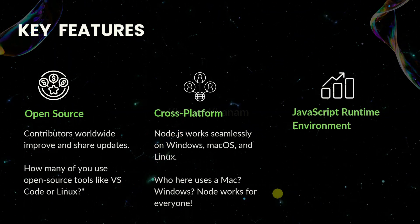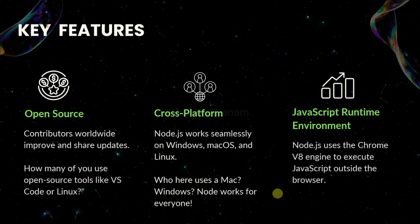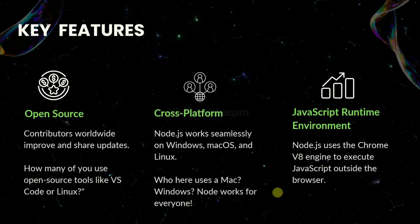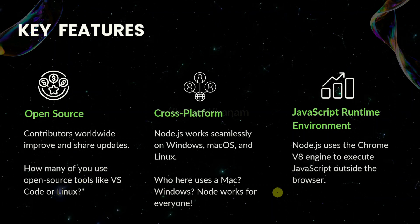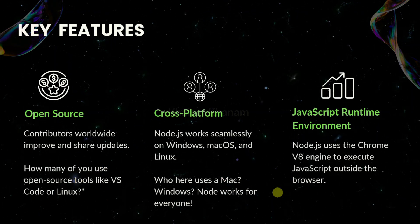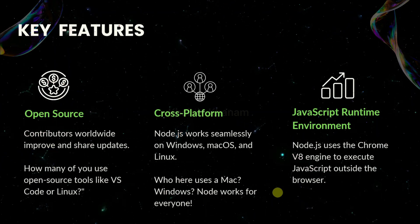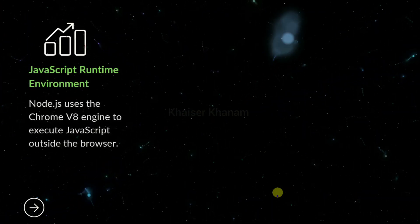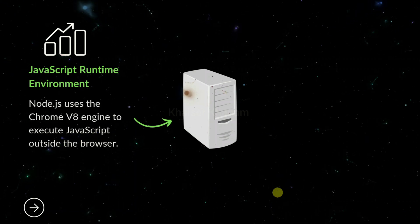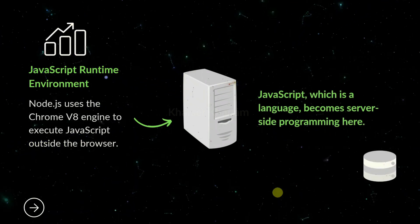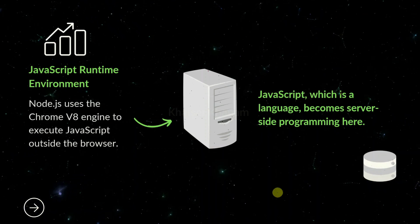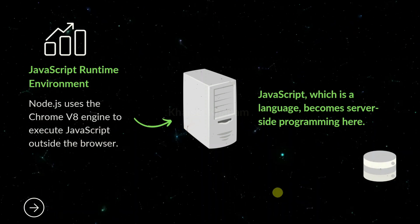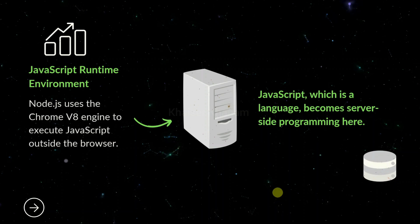The third key feature is very important to understand. Node.js is a JavaScript runtime environment. If you are already aware of JavaScript, you will be aware of the V8 engine. Using the Chrome V8 engine, we can execute our JavaScript code. Node also uses Chrome's V8 engine to execute JavaScript outside the browser, which means we can easily run JavaScript inside servers. This makes JavaScript a server-side programming language. Without Node.js, JavaScript is a client-side language; with Node.js, it becomes server-side.